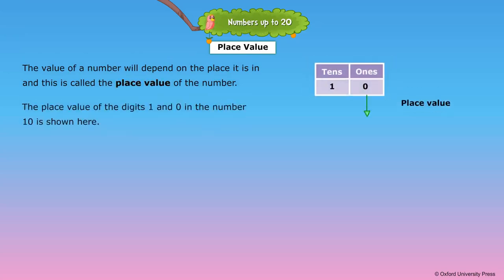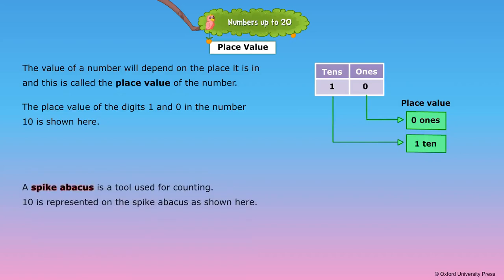The place value of the digits one and zero in the number ten is shown here. A spike abacus is a tool used for counting. Ten is represented on the spike abacus as shown here: one ten and zero ones.